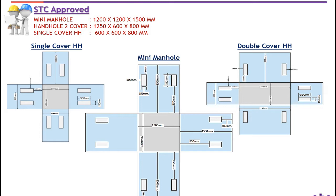Double cover handhole: this is 60 cm width with 1250 mm length. The depth is the same as single cover handhole — 80 cm or 800 mm. This double cover handhole is normally used in FTTH network so we can place a splice closure inside — we have enough space. If we need to put more splice closures, then we need a bigger size of handhole.